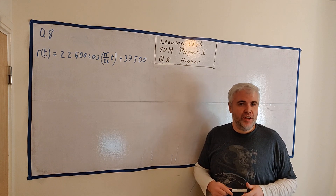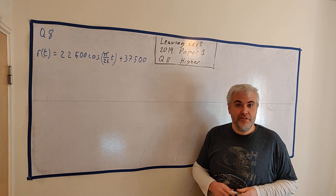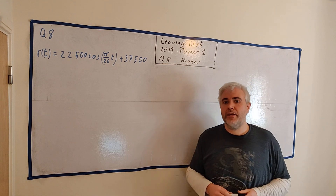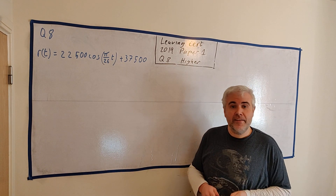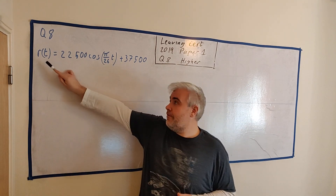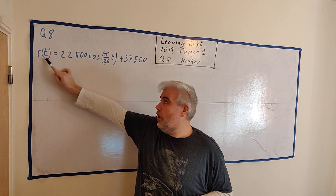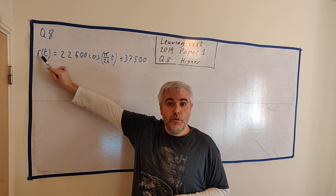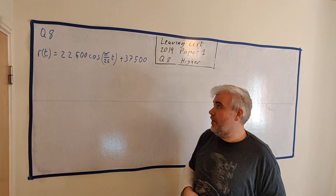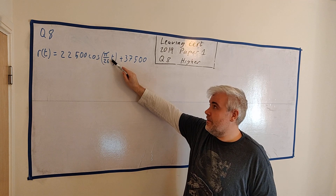This is question 8 of the 2019 Higher Level Leaving Cert insert paper. The question talks about a company generating revenue, and they've given us a function for it. This is a function in t — revenue with respect to time is given by this function here, showing how it fluctuates over time.